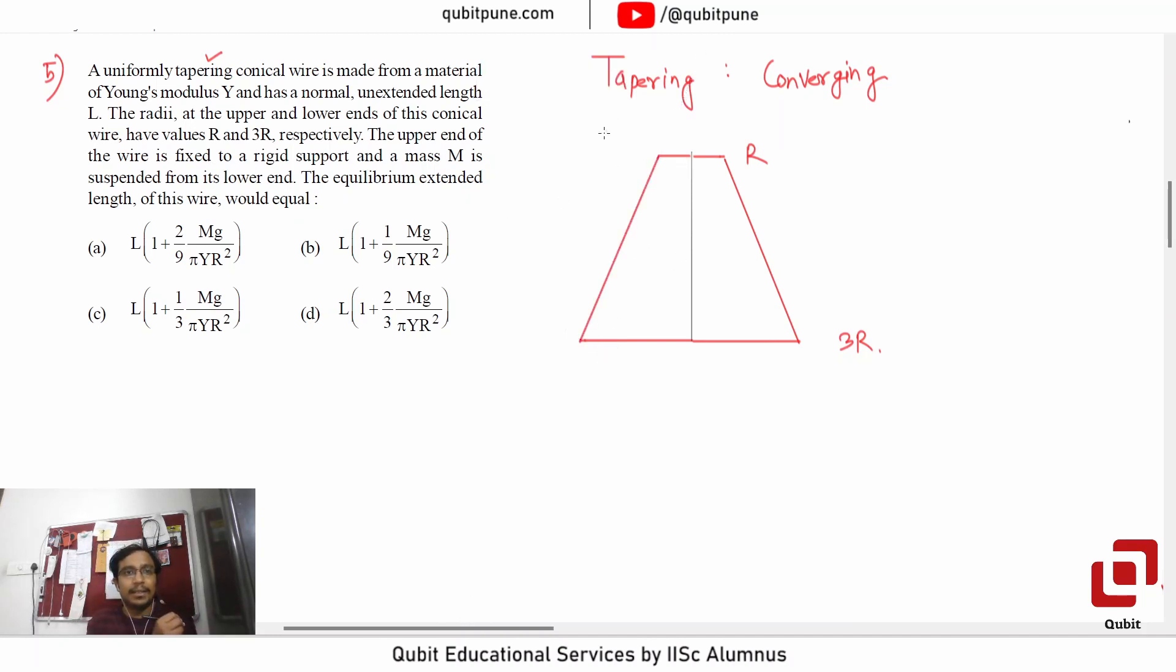Unextended length is L. The radii are capital R and 3R respectively. The upper end of the wire is fixed to a rigid support, and the mass M is suspended from its lower end. The equilibrium extended length of this wire would equal this.